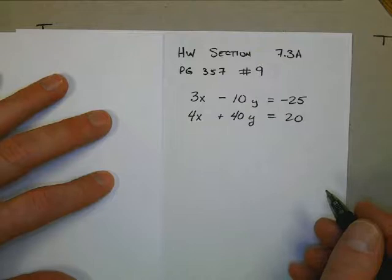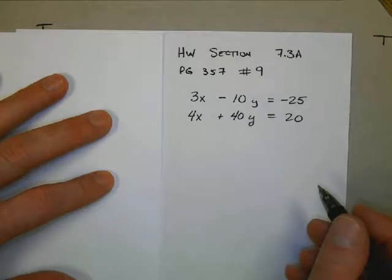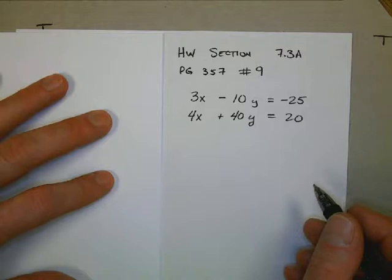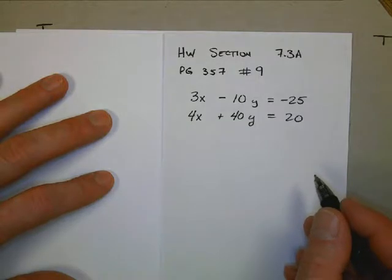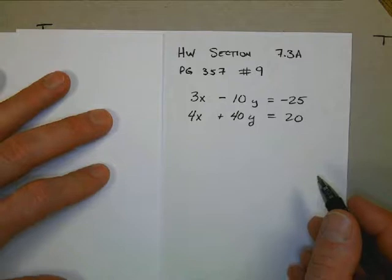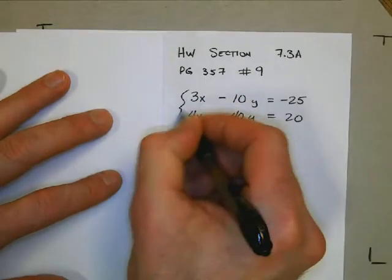Solved by elimination. I'm going to try to drop out the y's by getting a common number between negative 10y and 40y that are opposites. If I multiply the first equation by 4, positive 4, that will give me a negative 40. So that's what I'm going to do because that will get my y's to drop out.